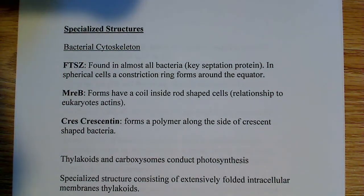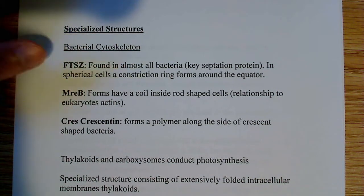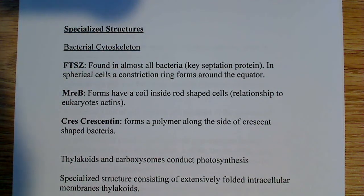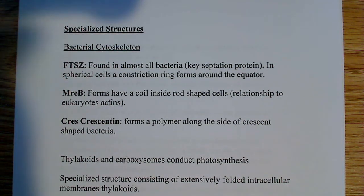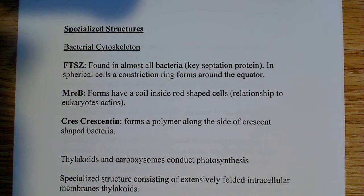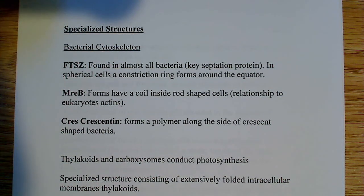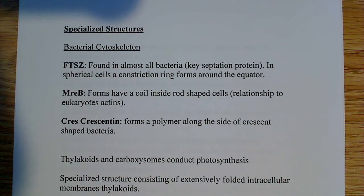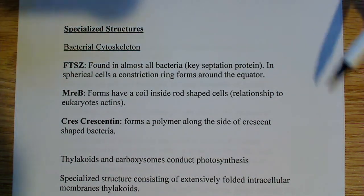It consists of a couple of different pieces depending on the type of bacteria you have. The most common, and that's almost common to all bacteria, is called FtsZ — we call it FtsZ — and it's found in almost all bacteria. It's a key septation protein, so the septum is what forms during binary fission when you're separating the two cells, forming two daughter cells. It occurs in spherical cells as a constriction ring that forms around the equator. Formation of the constriction ring is extremely important — how else would you separate the two individual cells once the chromosomes are replicated and the cells have enlarged?